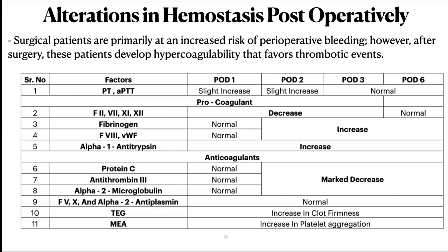Thromboelastometry showed a continuous increase in clot firmness, and multiplate aggregometry demonstrated an increase in platelet aggregation on post-operative day 6. There were no significant changes in factor V, factor X, and alpha-2-antiplasmin on platelet aggregability. This physiology, important for forming a clot, shows that fibrinogen, von Willebrand factor, and factor VIII increased from day 2 post-operatively, meaning the patient becomes pro-thrombotic. There is also a marked decrease in the natural anticoagulants protein C and antithrombin, along with alpha-2-macroglobulin, confirming the patient is pro-thrombotic from day 2, with increasing clot firmness and hyperreactive platelets.